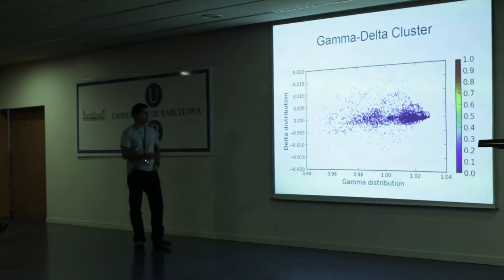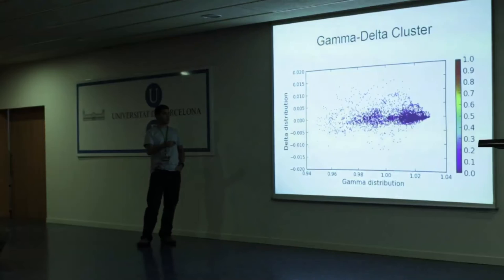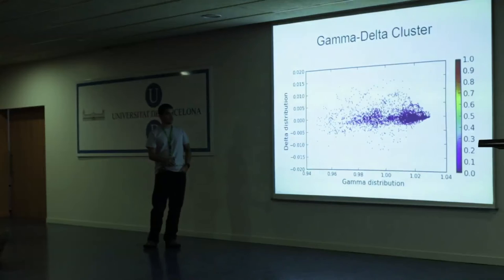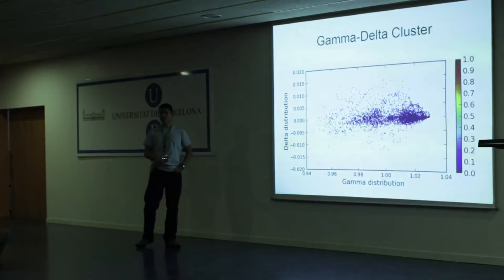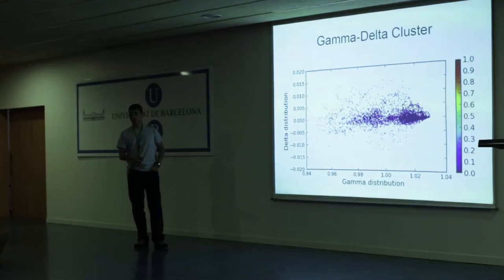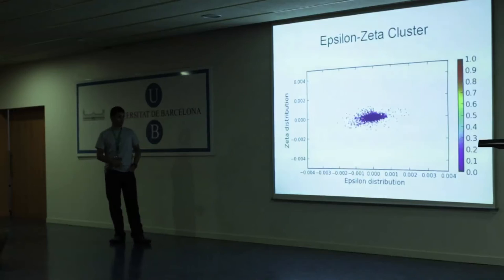If you combine the gamma distribution with the delta distribution, you get a cloud of points more or less like this. The color indicates the level of corruption - in this case, there is no corruption because everything is blue. I will show an example with corruption shortly. This other cloud is what you get using the epsilon and zeta detectors - this is basically how your data set behaves normally.